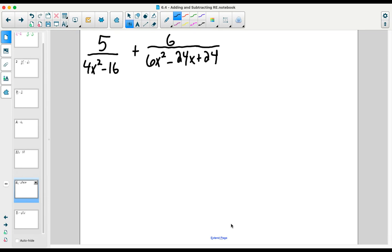In this example for finding the sum of two rational expressions, we have a binomial divisor and a trinomial divisor. Regardless of how complicated the divisors might look, our process remains the same.